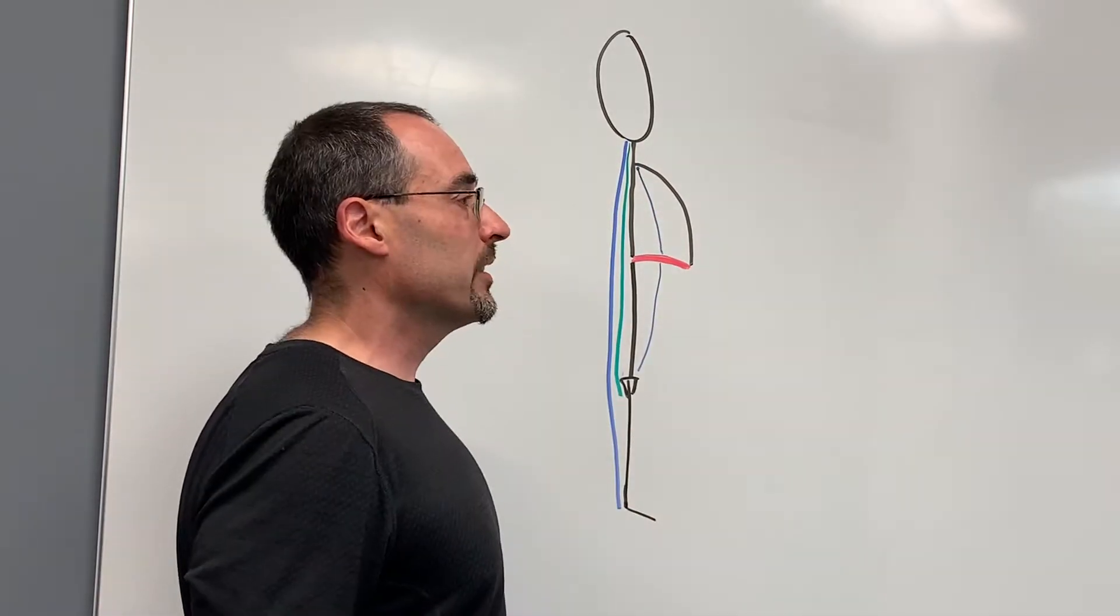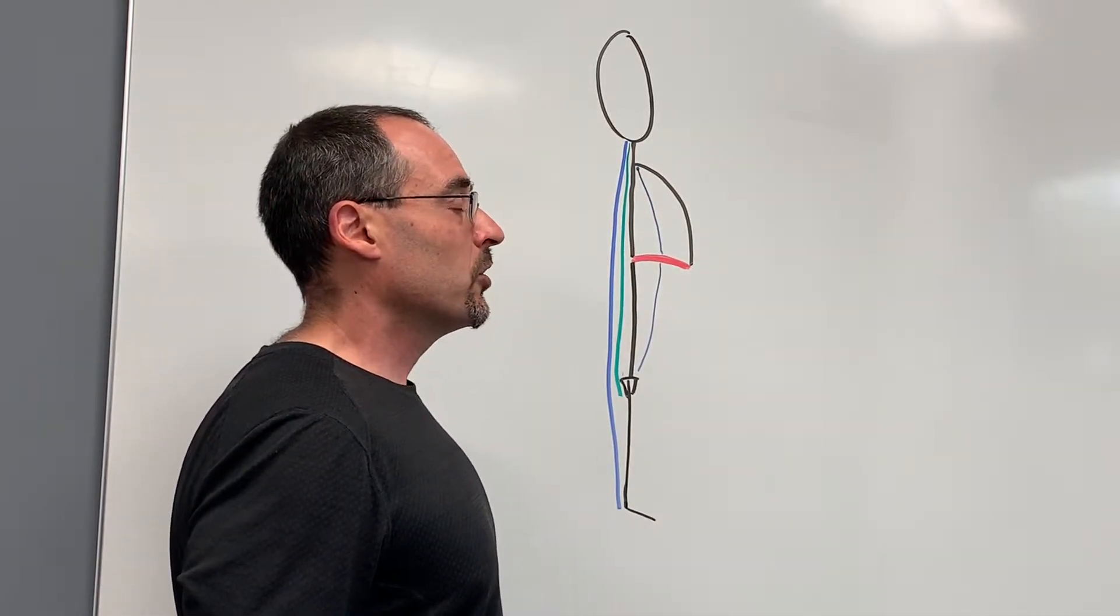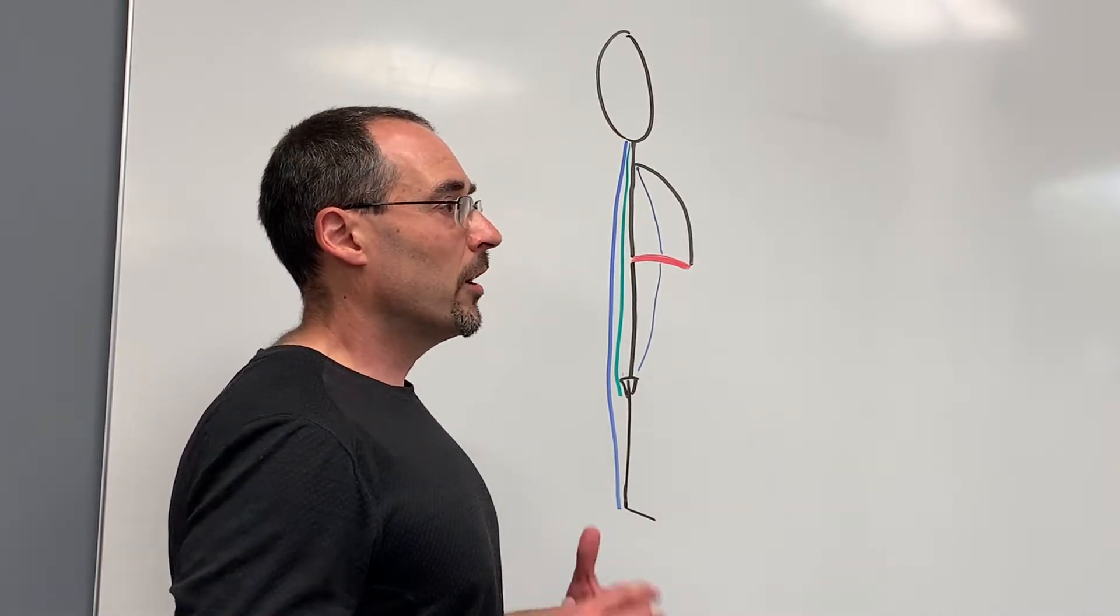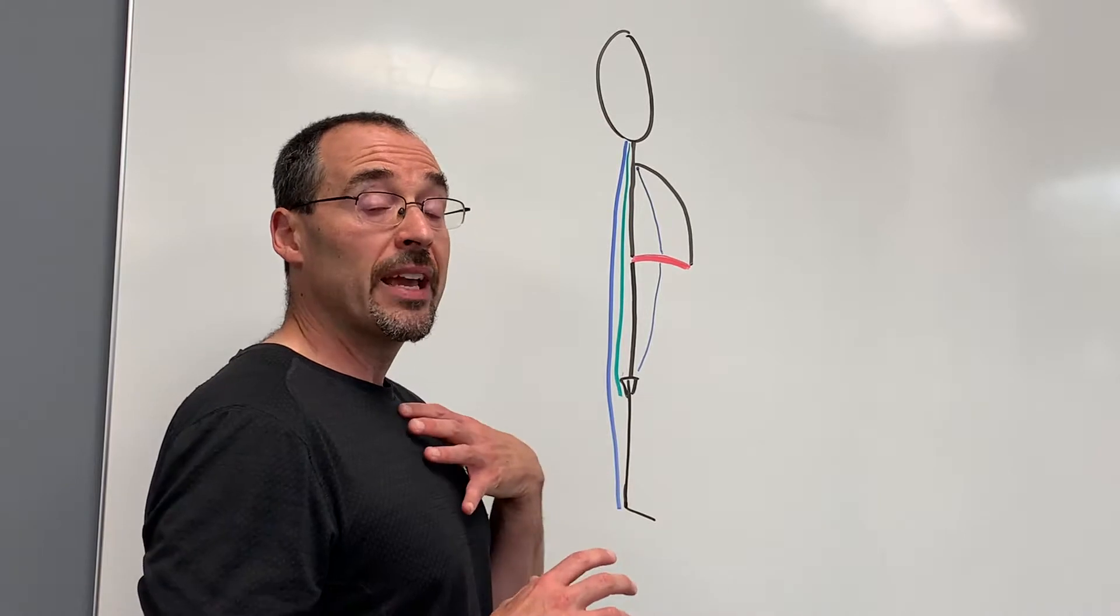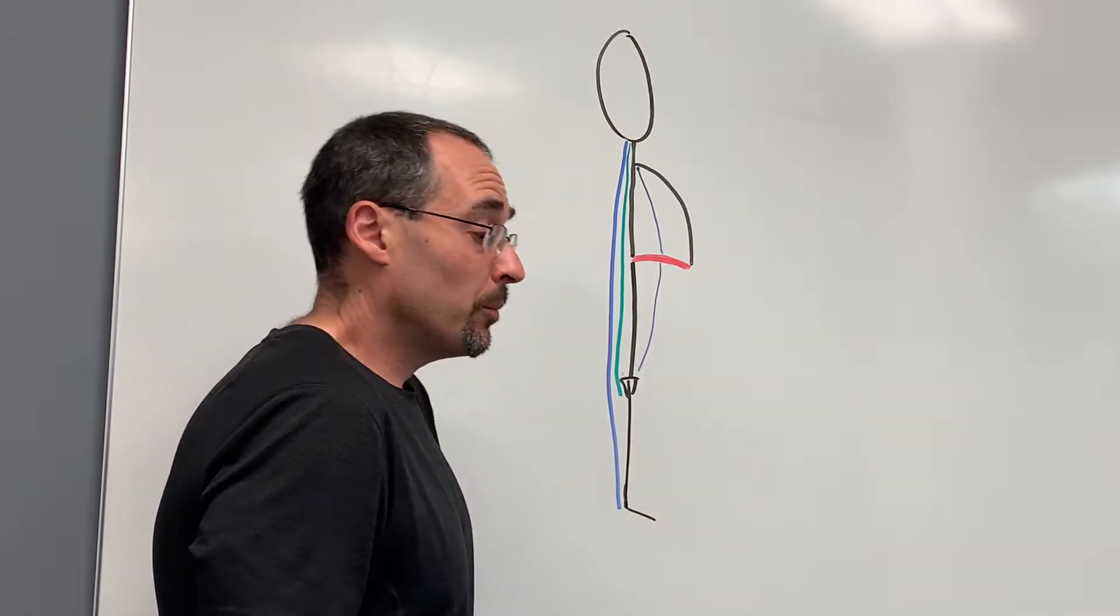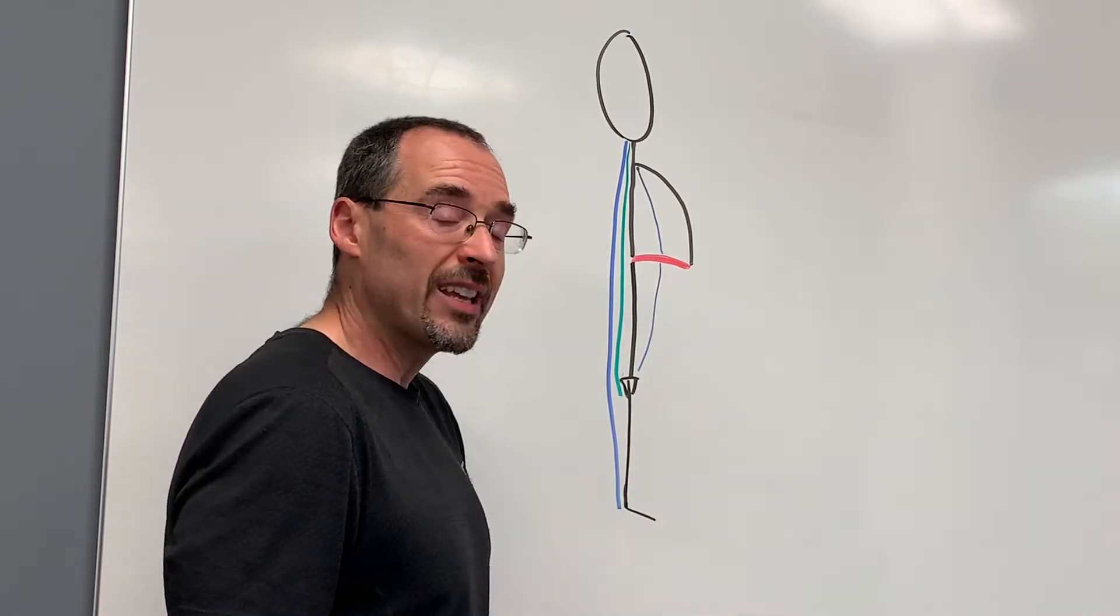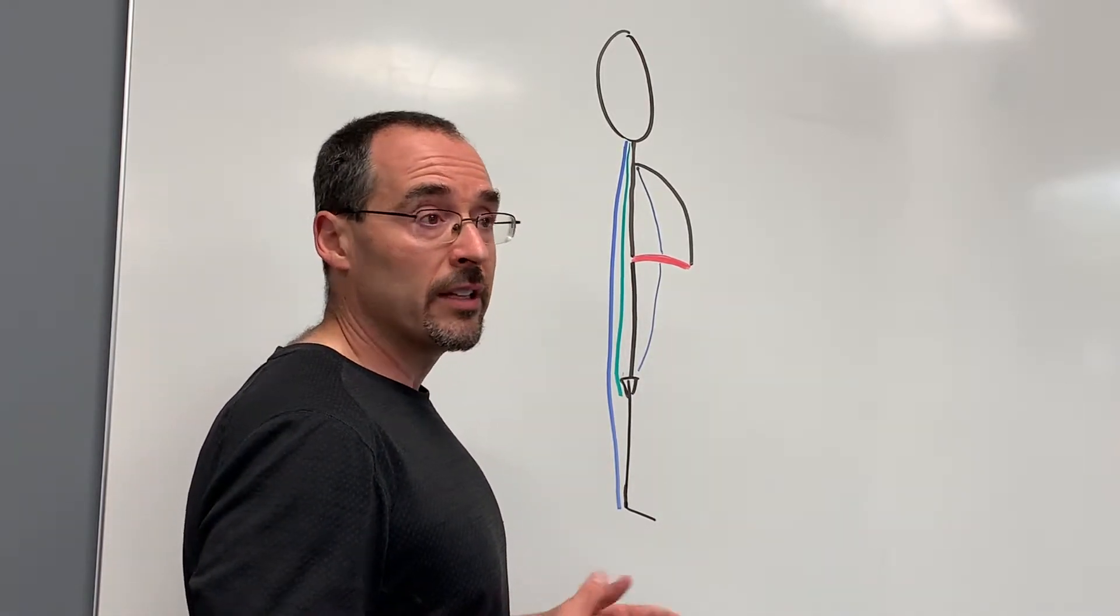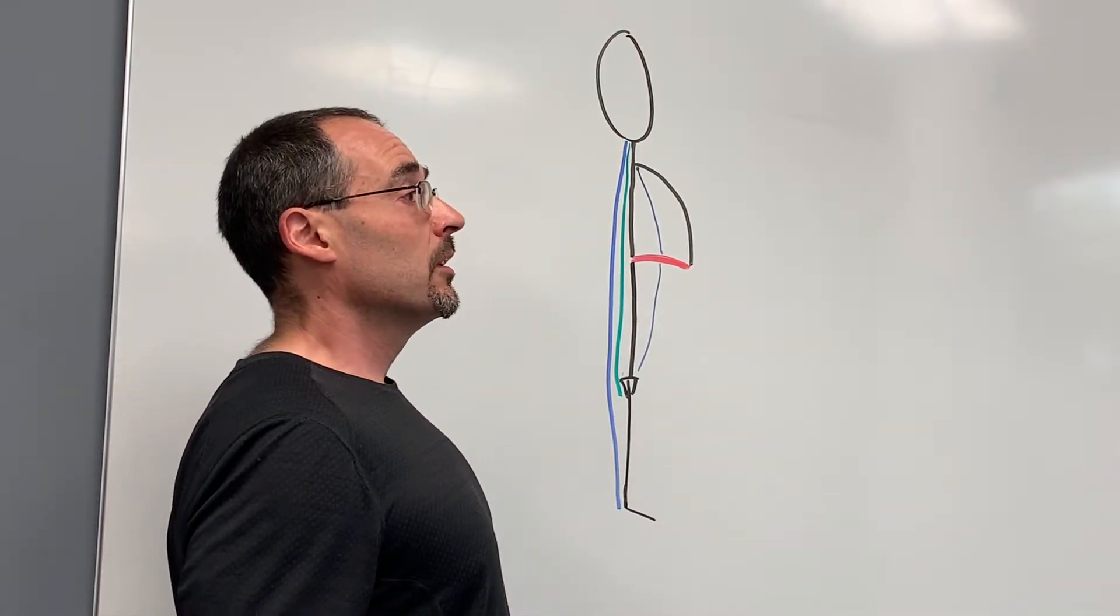So when I stand here, even though I'm just resting here, this position is a reflection of the dynamic tension between the anterior fascial lines that want to pull me forward along with gravity, as well as the posterior fascial lines that are pulling me backwards to keep me upright.